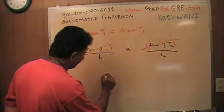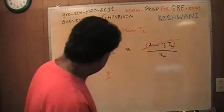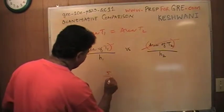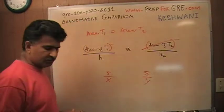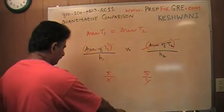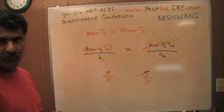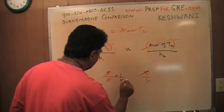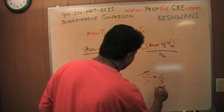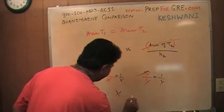which quantity is bigger? Well, this 5 plays no role. In other words, what you're asking me to compare is 1 over x versus 1 over y, which is the same as comparing x and y.